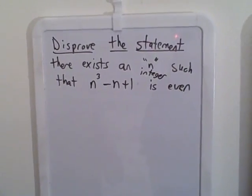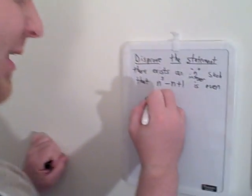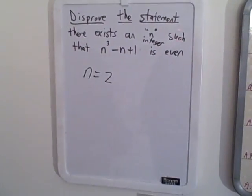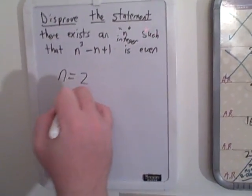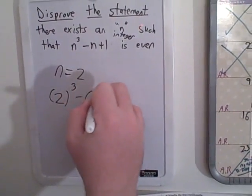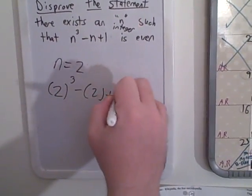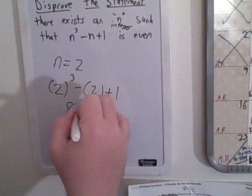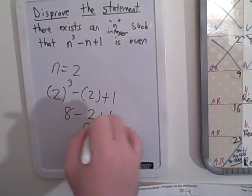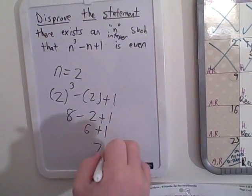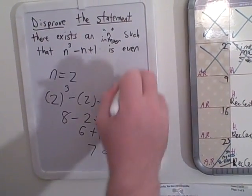Human intuition would probably say, well, that's easy — we can find something that disproves the statement. Let's say n equals 2. If n equals 2, then 2 cubed minus 2 plus 1 is 8 minus 2 plus 1, which is 6 plus 1, which is 7. And 7 is an odd number — that's not even. That disproves the statement.